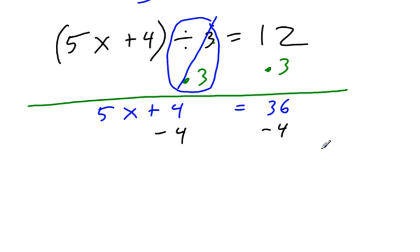Minus 4, minus 4, 32, 5x equals. Then I'm going to divide by 5, divide by 5.